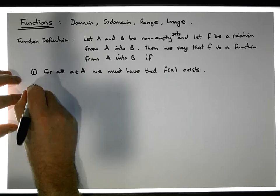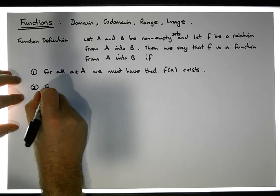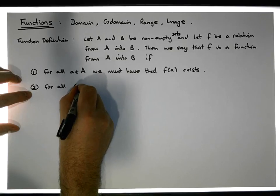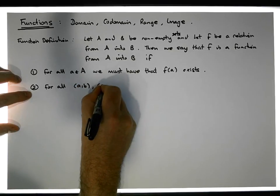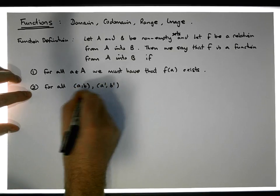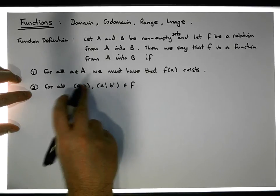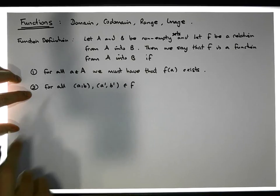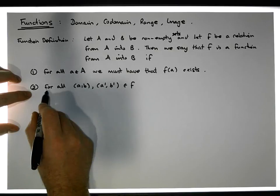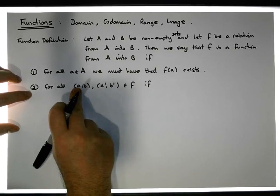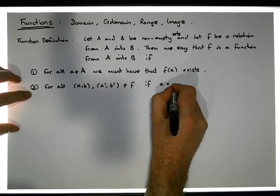Point two says that for all ordered pairs—for all (a,b) and (a',b') that are elements of f—in other words, we've got two pairs that are mapped. So for all of these possibilities, if a equals a',